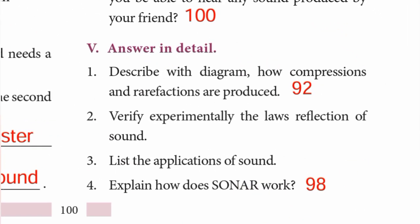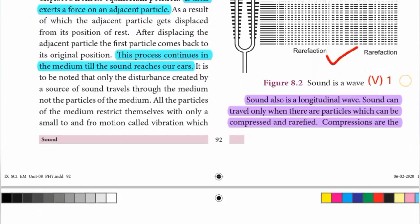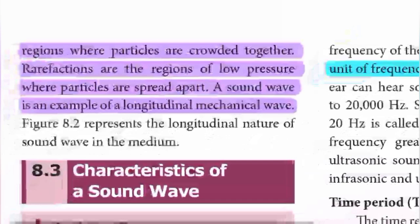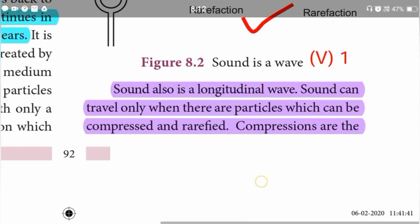Roman numeral V — Answer in detail. Question 1: Describe with a diagram how compressions and rarefactions are produced. Sound is a longitudinal wave. Sound can travel only when there are particles which can be compressed and rarefied. Compressions are the regions where particles are crowded together. Rarefactions are the regions of low pressure where particles are spread apart. A sound wave is an example of a longitudinal mechanical wave.